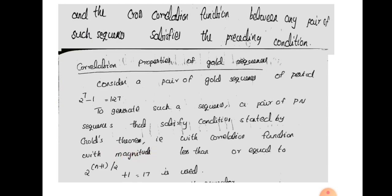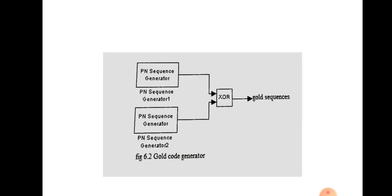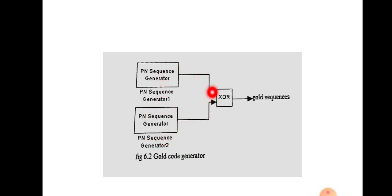We will experimentally prove this. Looking at the block diagram of the Gold code generator: the first PN sequence generator and the second PN sequence generator are both present, and both their outputs are XOR-ed together to get the Gold sequences.